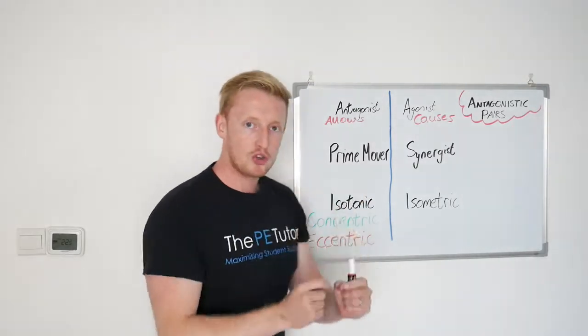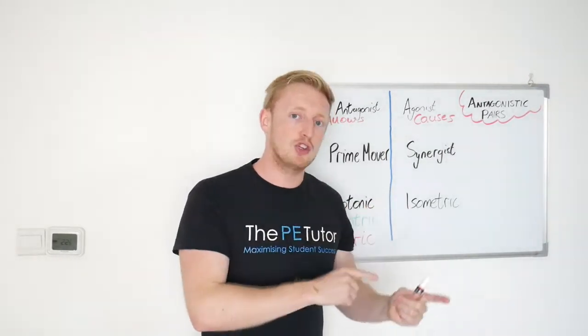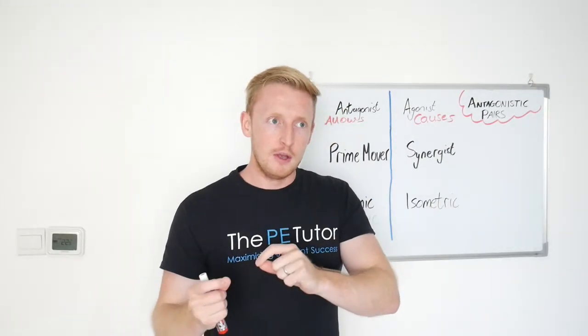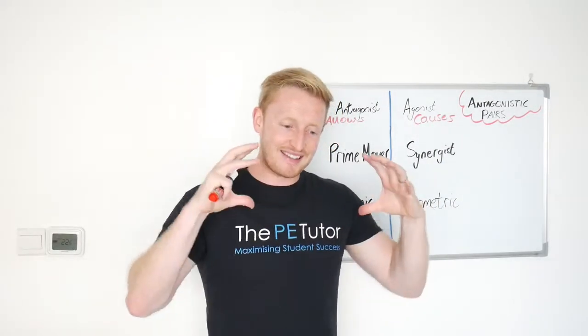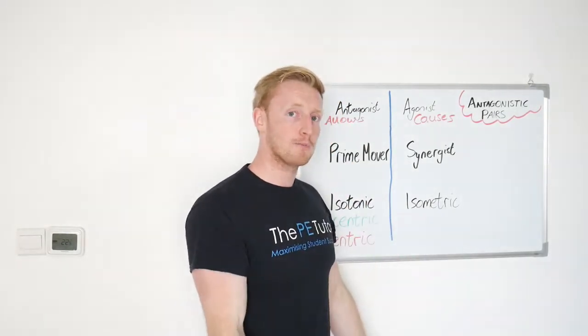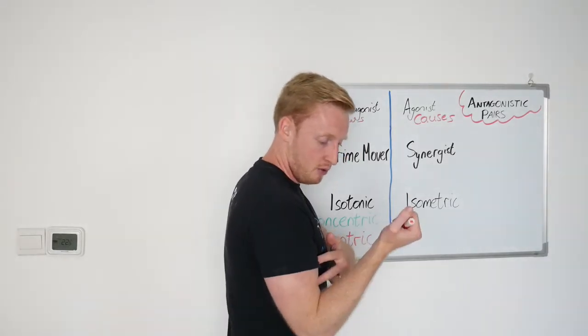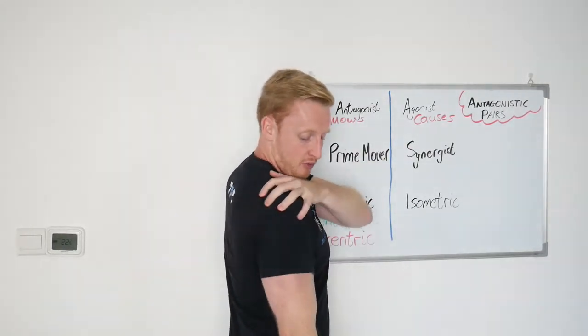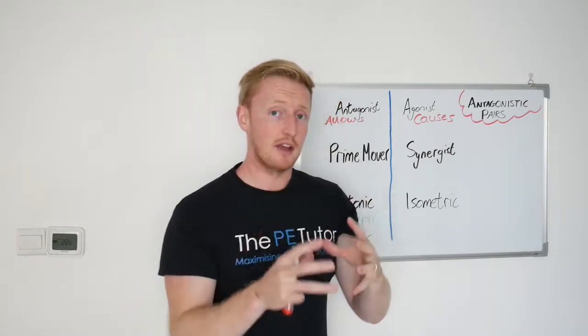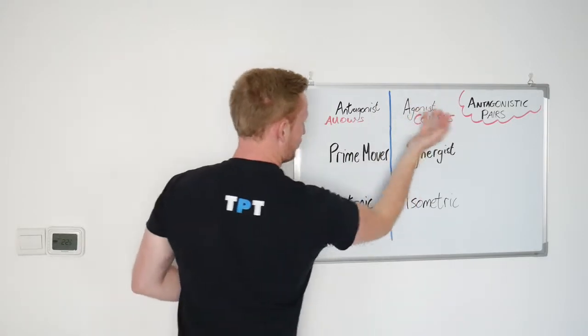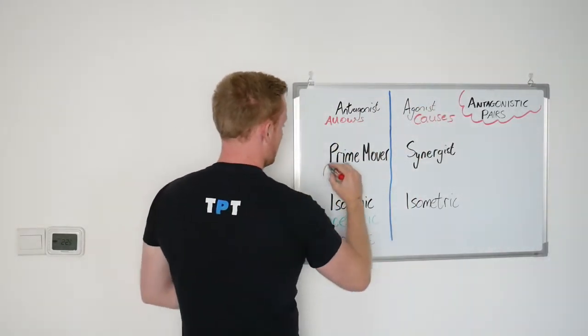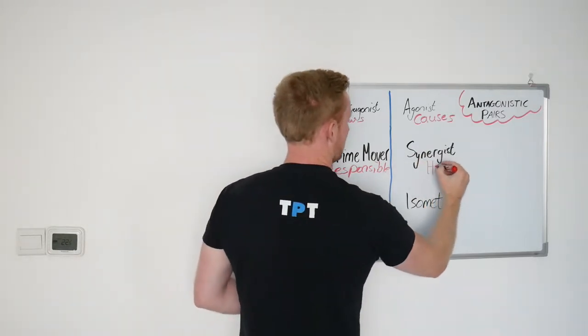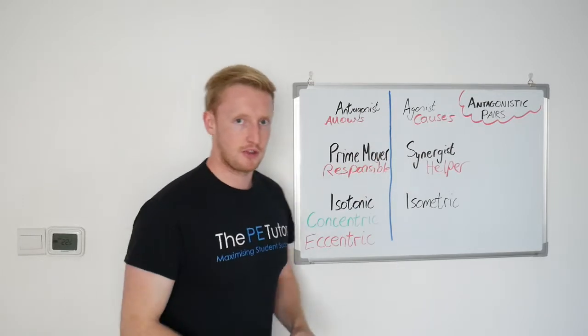So the prime mover is the one contributing the most to the movement action you're currently performing, whereas the synergists are slightly smaller muscles or less involved muscles, but they're still working, they're still contracting to stabilize the location of the body that is moving. In the case of that elbow flexion, bicep is the prime mover, and we've got the rear delts and the latissimus dorsi, they're helping contract and anchor that shoulder joint in position so the humerus doesn't rock forward, it's stayed in its position, and the joint stays safe. So prime mover is responsible, and the synergist is the helper, the assistant to the prime mover.